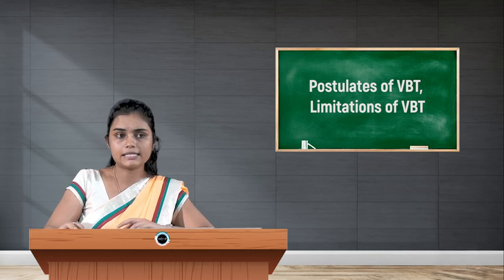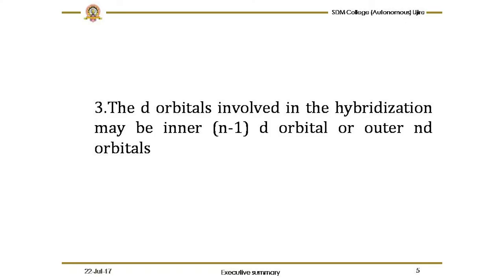The next postulate states that the d orbitals involved in hybridization may be the inner (n−1)d orbitals or the outer nd orbitals. Which type is used depends on the strength of the ligand that approaches the metal ion.